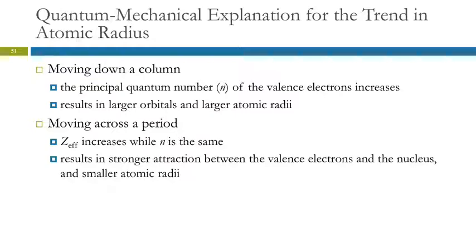We need to be able to remember the trends. The way to remember these is to make sense of why, so you can reason it out rather than rote memorize. Going down is pretty easy — that makes sense. Going across, if you remember we're filling up the same level but increasing the charge in the nucleus so it's pulling them in — that helps you remember that as you go across, it gets smaller.